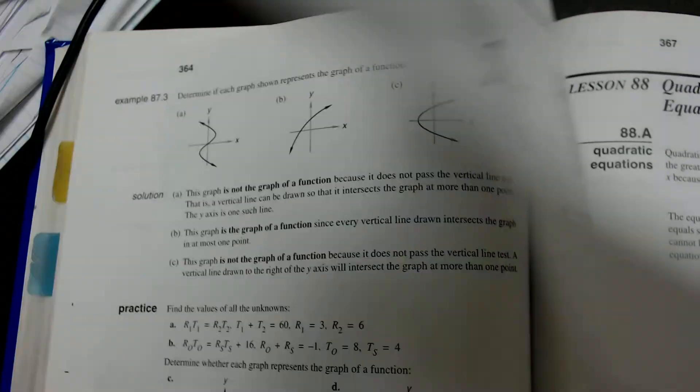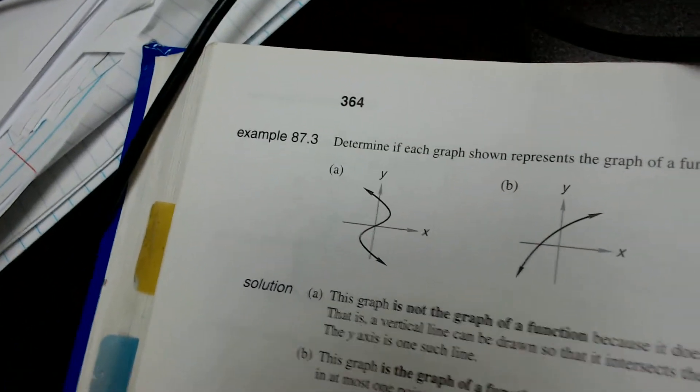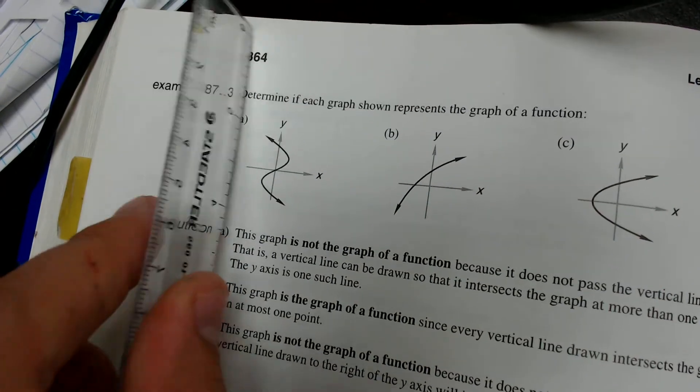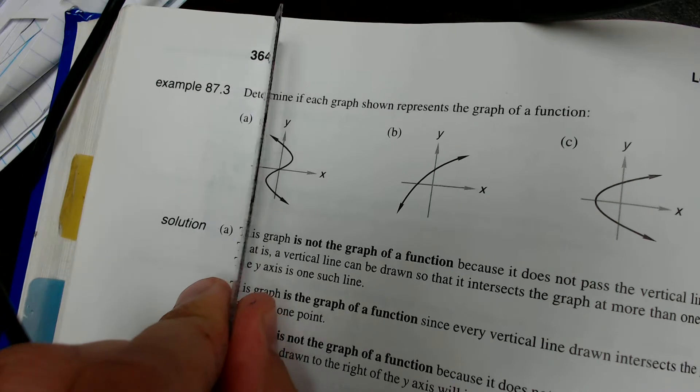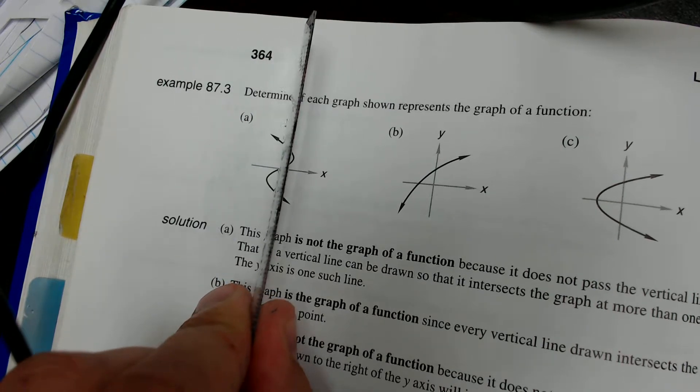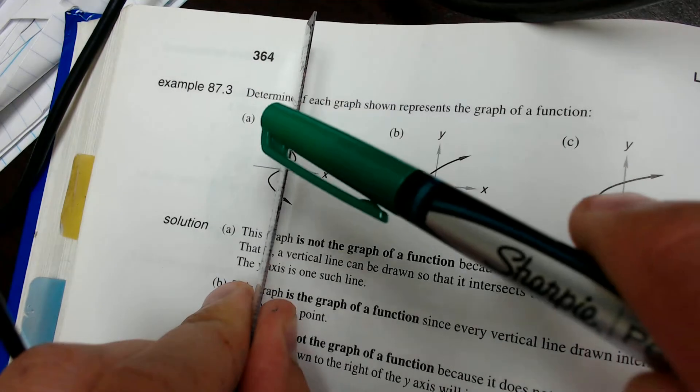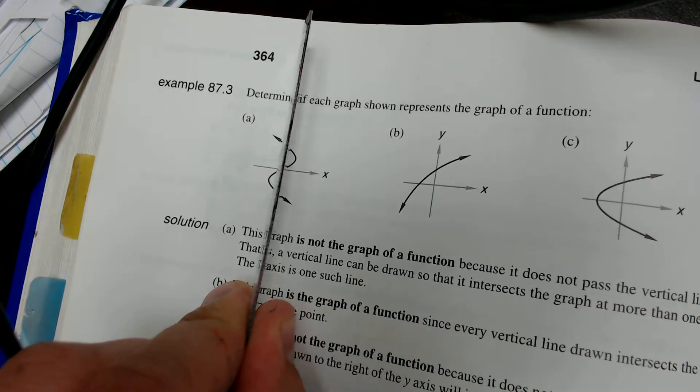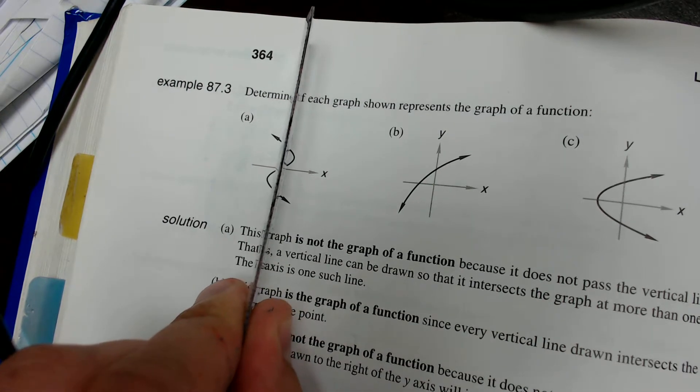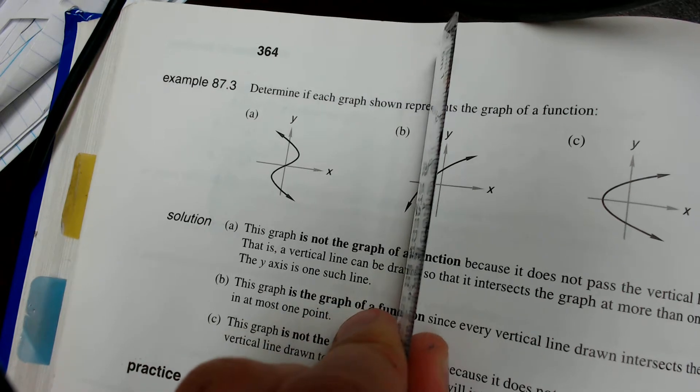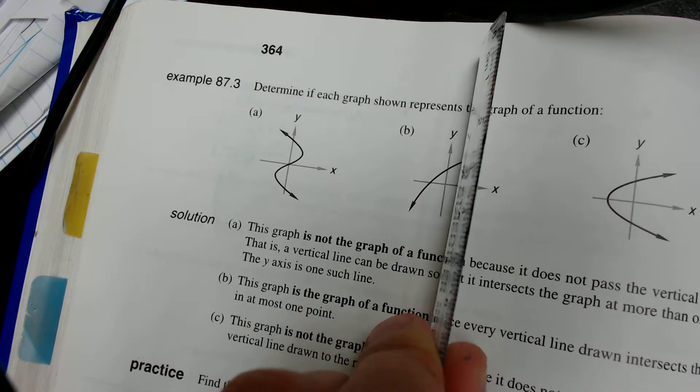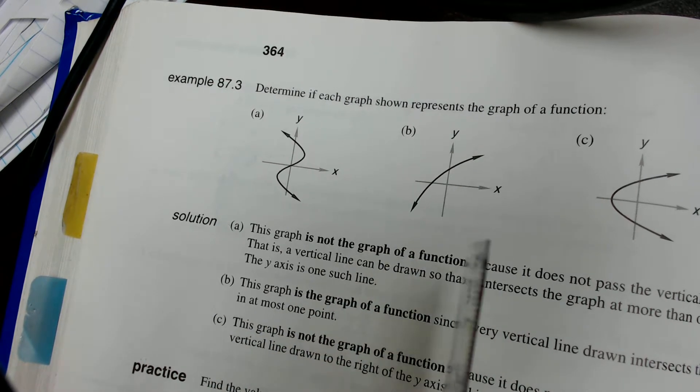So let's go ahead and test a few of these. If I trace this function or this graph with a vertical line, right here I see I'm touching it at one, two, and then three points. So that is absolutely not a function because it touches at more than one point. Now what about this one? If I trace this one, I'm only ever touching the line at one point, so this one is a function.